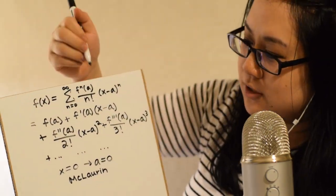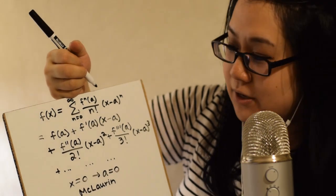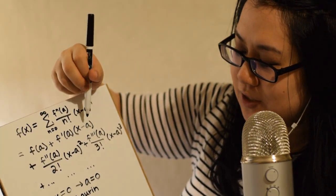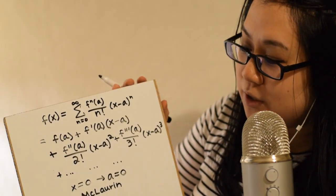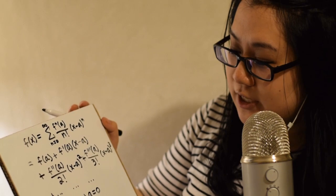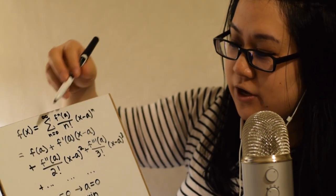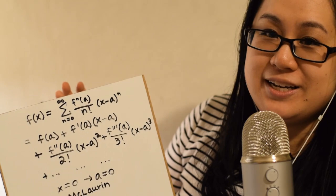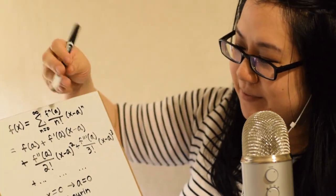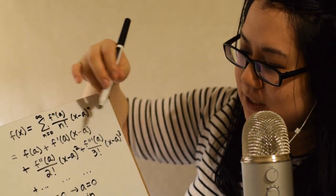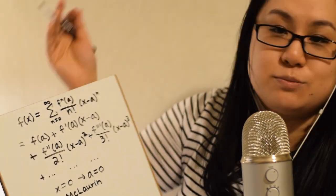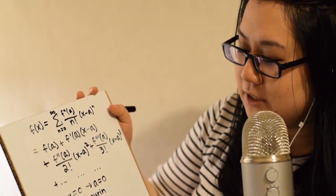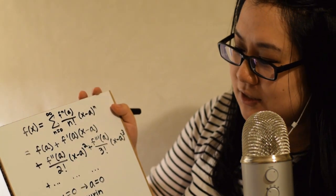To find the Maclaurin expansion, you just set a to zero. So it's f of zero, plus f prime of zero times x minus zero — which is just x — plus f double prime of zero over two factorial times x squared, and so on. Really, it's just a giant derivative party: you find all the derivatives, evaluate them at a — or at zero for Maclaurin — and plug in.